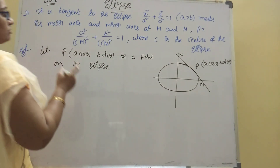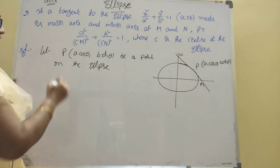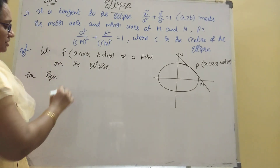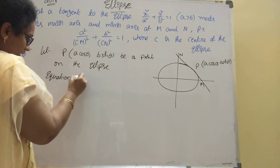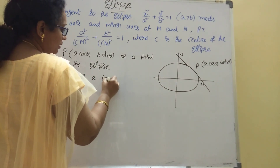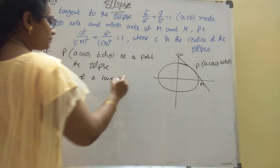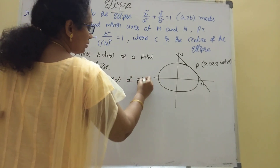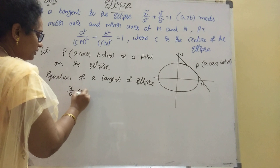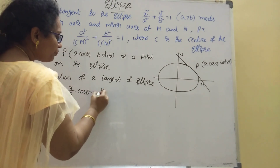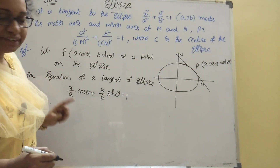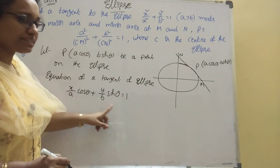The equation of the tangent to the ellipse at point P(a cosθ, b sinθ) is the parametric tangent formula: x/(a cosθ) + y/(b sinθ) = 1.